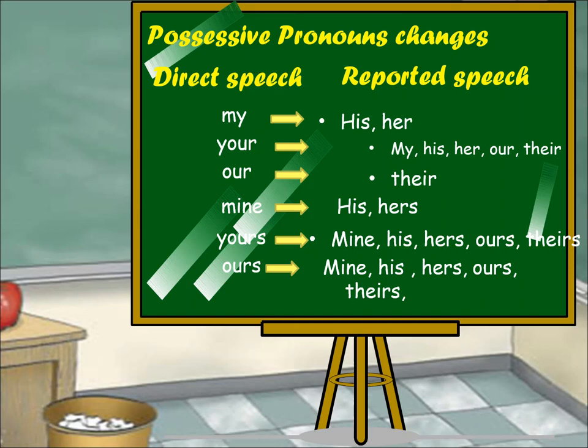Now some examples regarding changes in time form: Ankit said, 'I am busy now.' In indirect speech: Ankit said that he was busy then. When talking about commands and requests: Simon said to Arjun, 'Go away.' This becomes: Simon ordered Arjun to go away. For exclamations and wishes: He said, 'Alas! I am undone.' This becomes: He exclaimed sadly that he was undone.